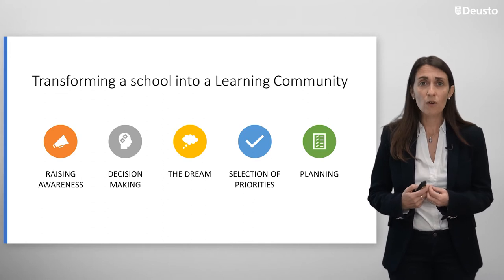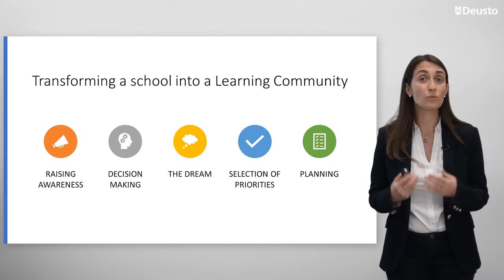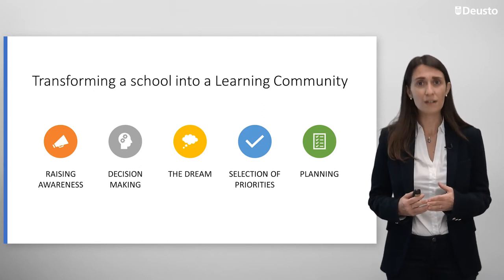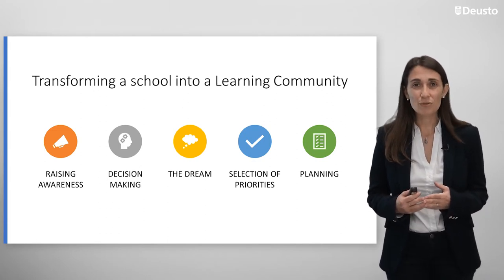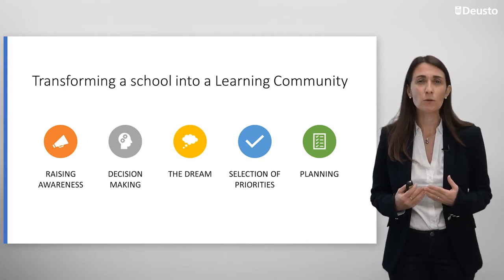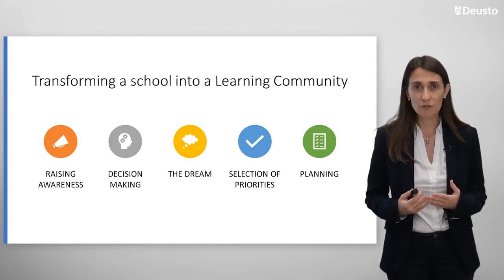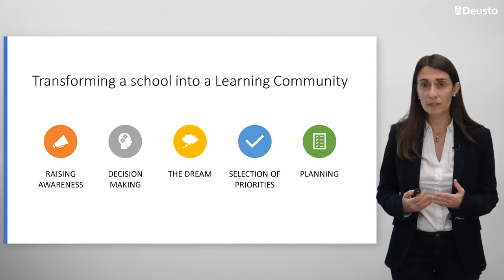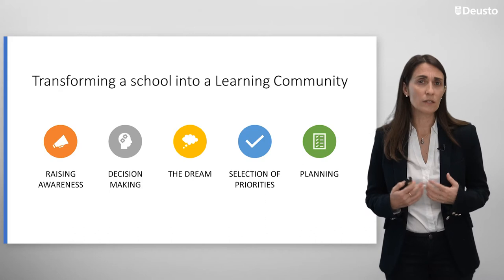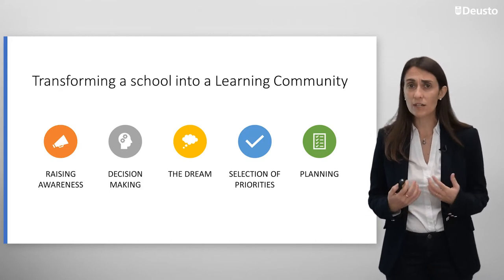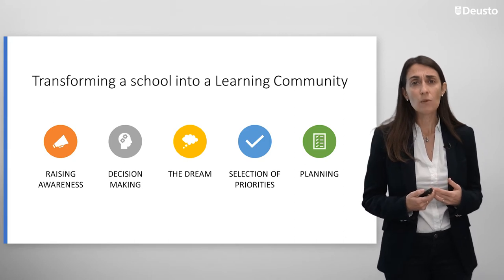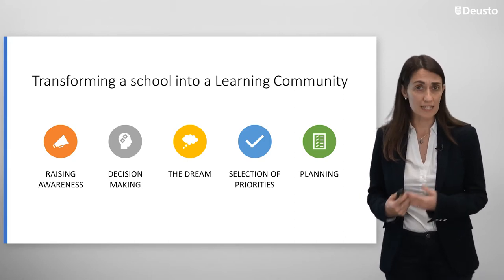All the approach is oriented to transformation, never to adaptation. We know from scientific evidence that transforming the social and cultural context is essential to provide high quality education for all. If we want to transform our center — whether it's an adult school, early years school, elementary or secondary, any kind of educational center — into a learning community, we will go through five steps.